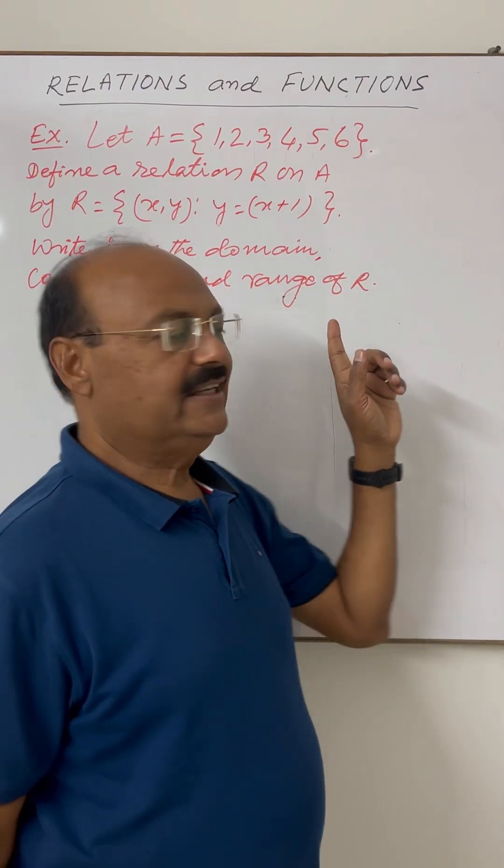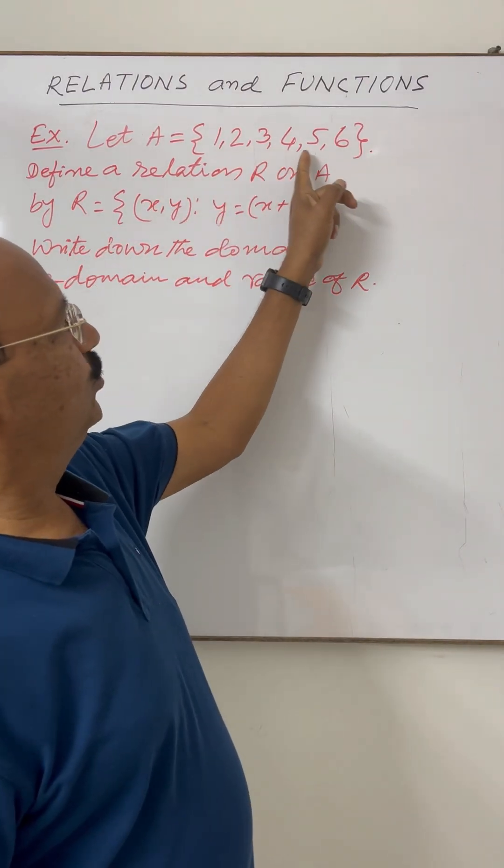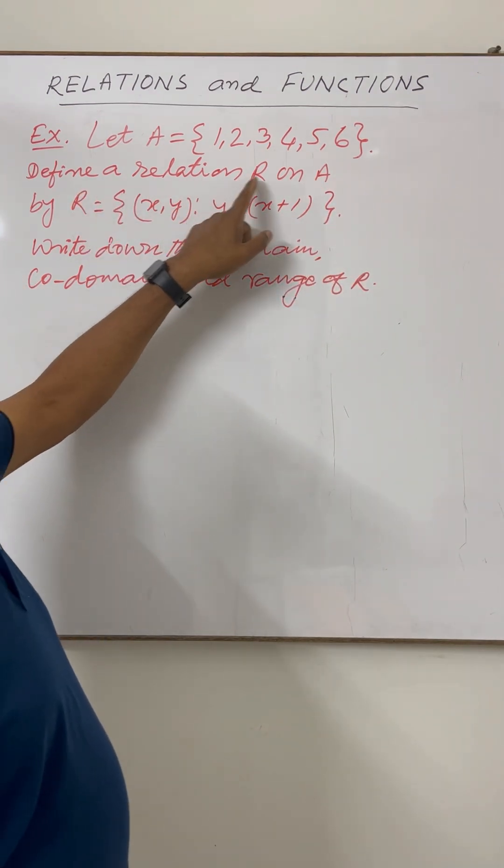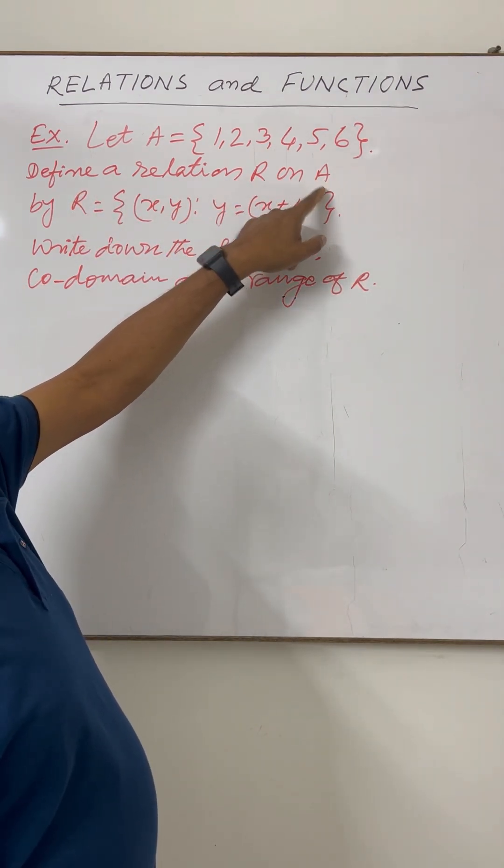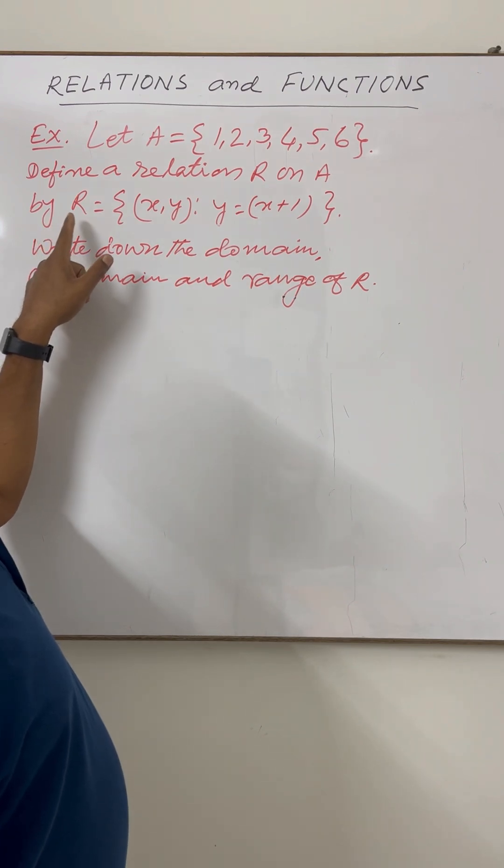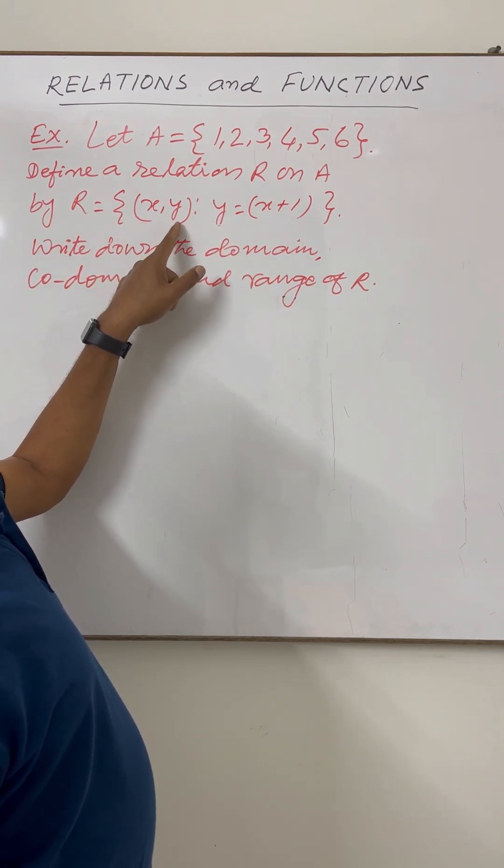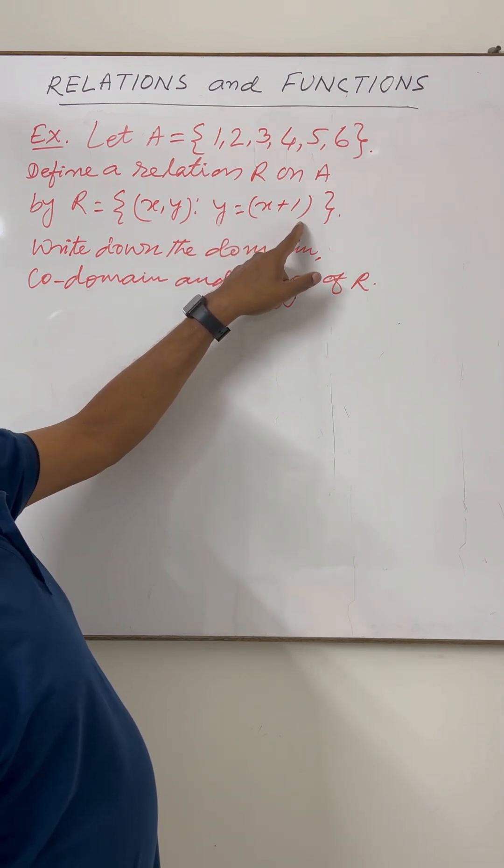Here given set A is having elements 1, 2, 3, 4, 5 and 6. We have to define a relation R on this set A by R equals ordered pairs (x, y) such that y equals x plus 1.